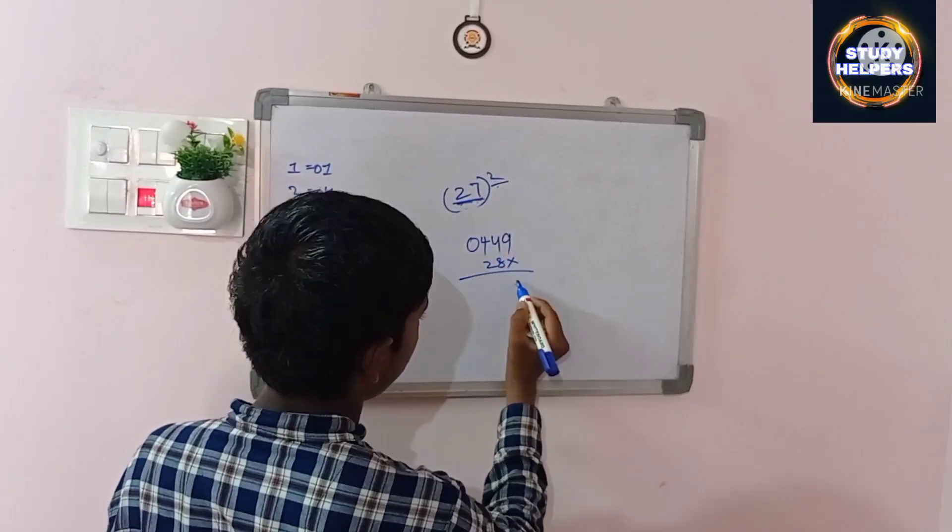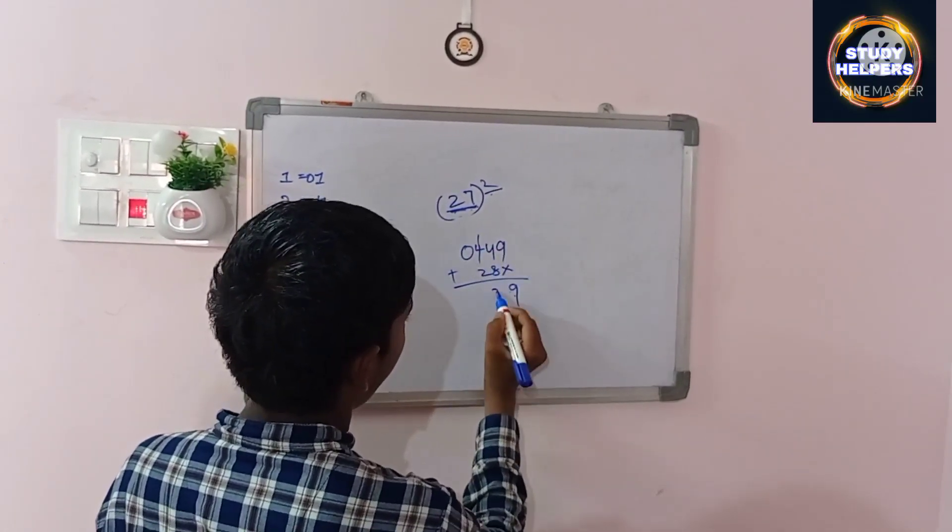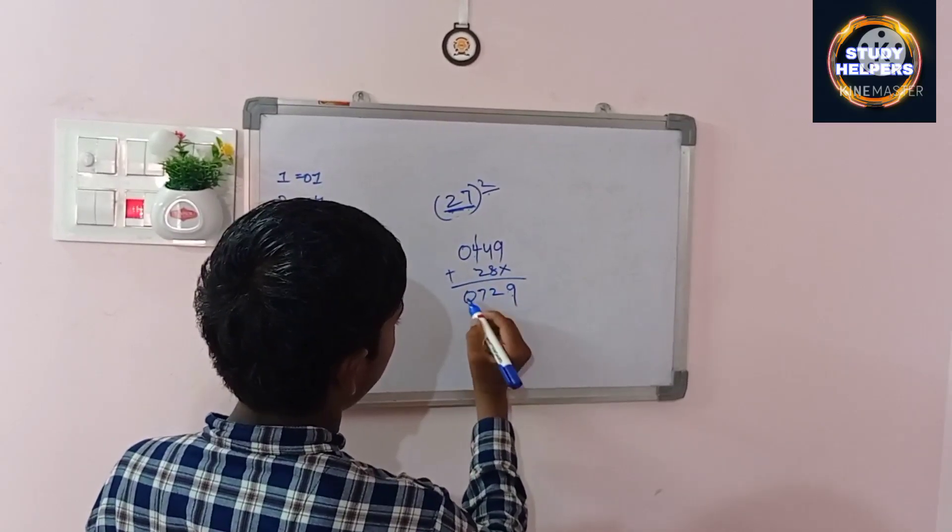We should leave the ones place digit. Means we should add these two numbers: 9, 12, 7, 0.